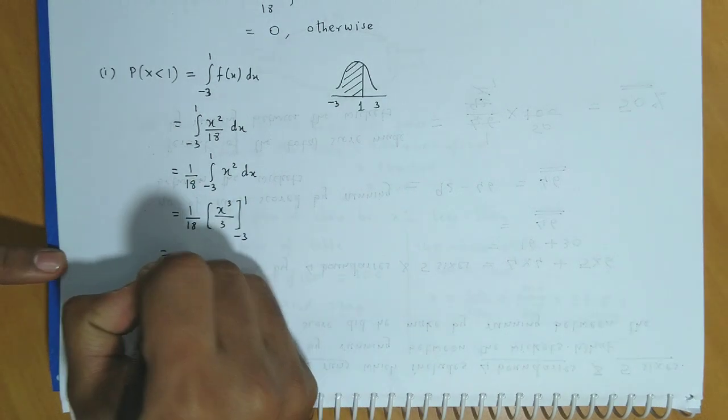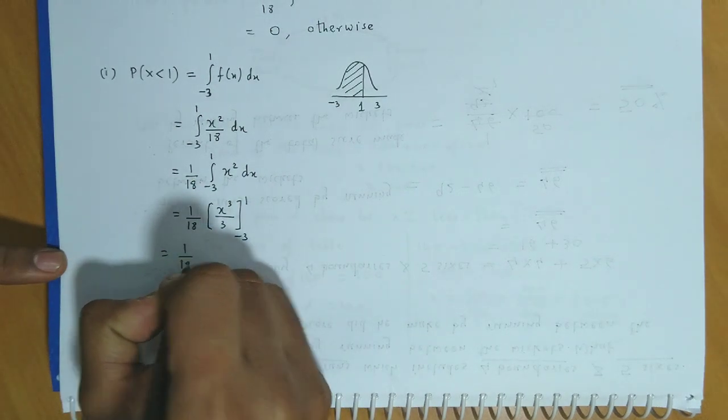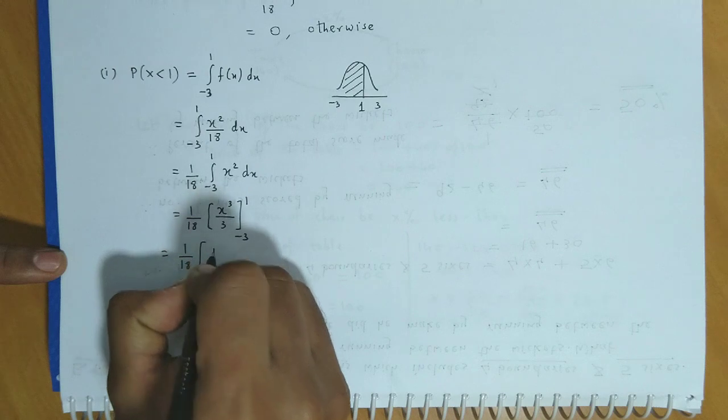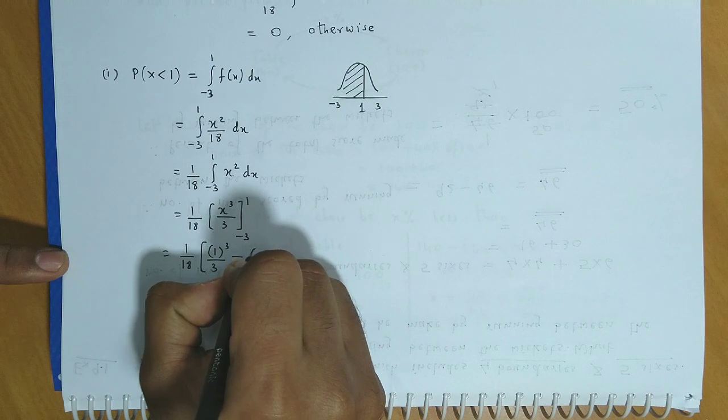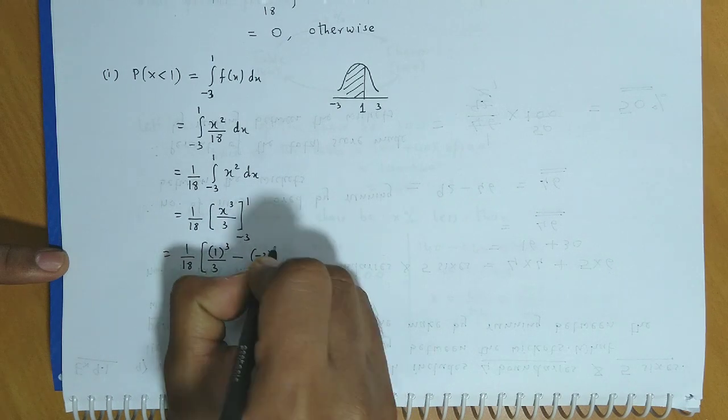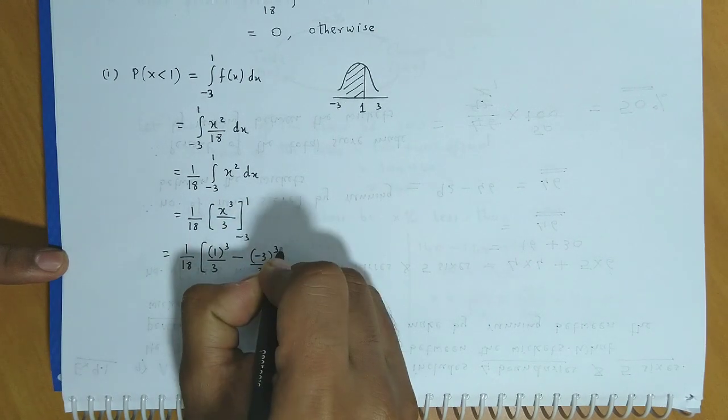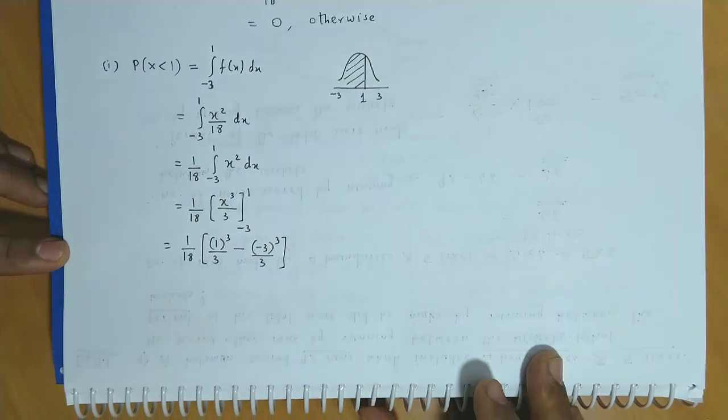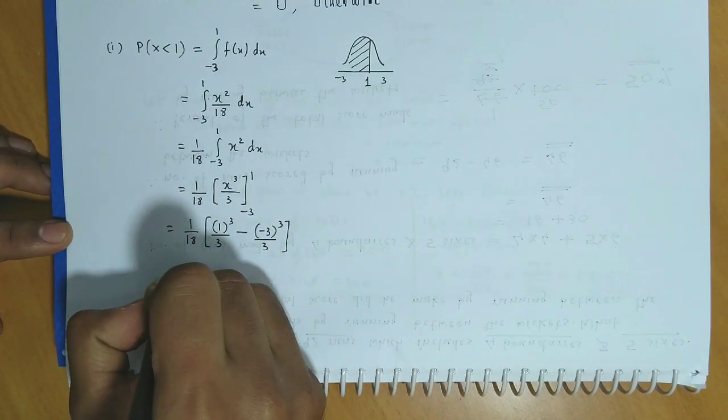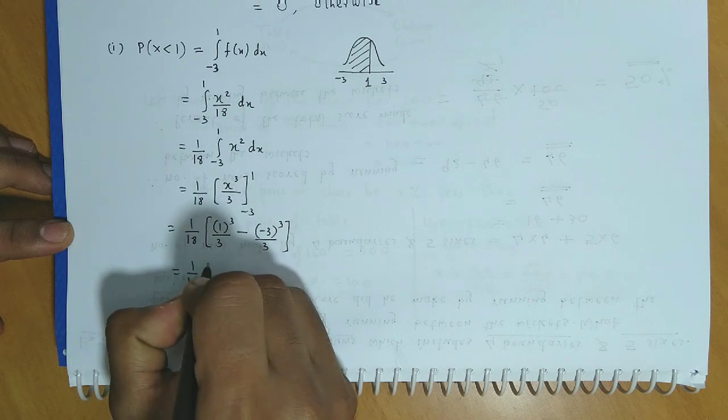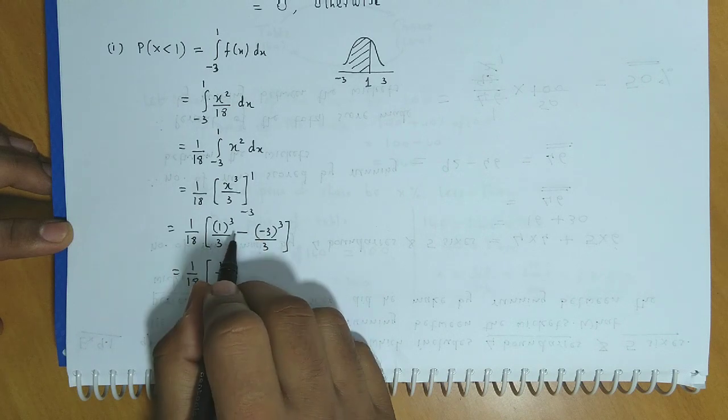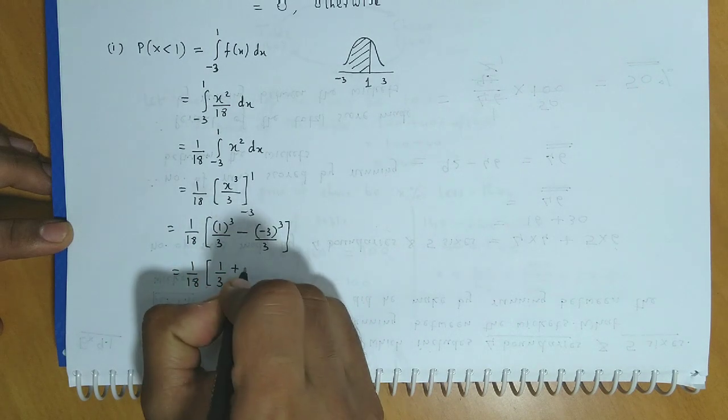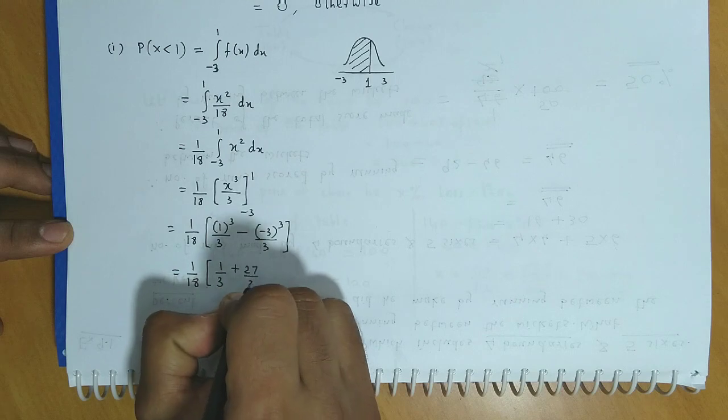So we obtain 1 by 18 times x³ upon 3, evaluating from minus 3 to 1. So what we have here is 1 by 18 times 1 by 3 minus minus 3 cube upon 3. This becomes 1 by 3 minus negative 27 by 3, which becomes plus 27 by 3.